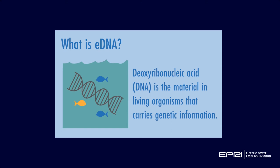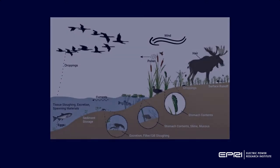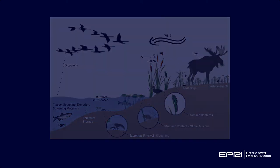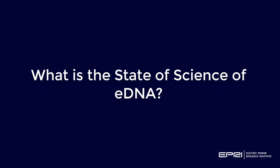Simply put, eDNA is DNA from cells that are released by an organism into soil, plants, or water. All living things have DNA and they all continuously release it from their skin, body hair or fur, scales, saliva, or down the intestinal tract. So fish in waterways would be releasing urea and scales, frogs can release cells when they're going through metamorphosis, and birds will leave bird droppings and feathers.